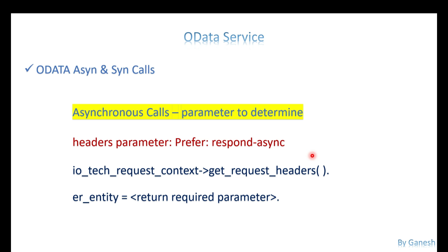If this value is present in your header parameter, you start writing the functionality of your asynchronous call — creating a batch job, triggering a workflow, or submitting a long-running report. To read it, we use the signature parameter IO_TECH_REQUEST_CONTEXT and its method GET_REQUEST_HEADER, which carries all header parameters as an internal table. From there you read the 'prefer' parameter value.